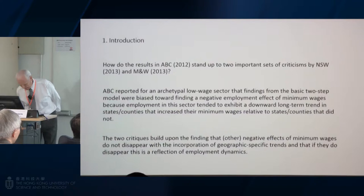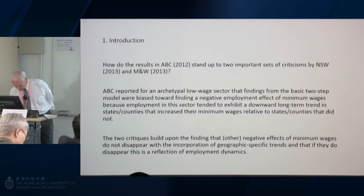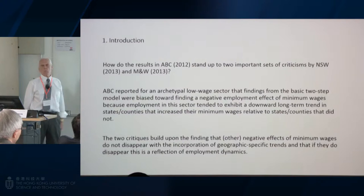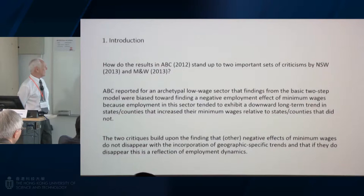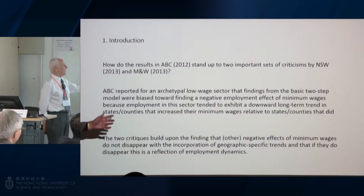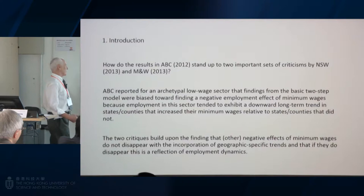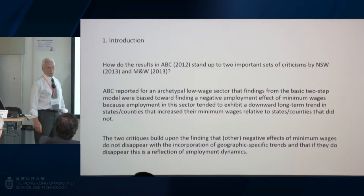We're looking at an archetypal low wage sector, which is NAICS 722, which we call restaurants and bars a little bit informally. This is an archetypal minimum wage sector in that it has the highest percentage of workers at or below the minimum wage. We basically augment the basic two-step model with a geographic specific trend — in fact a county specific linear trend — and we find that the findings from the basic two-step model were biased towards finding a negative employment effect of minimum wages, basically because minimum wages are increased most in those sectors which are tending to exhibit downward long-term trends in employment.